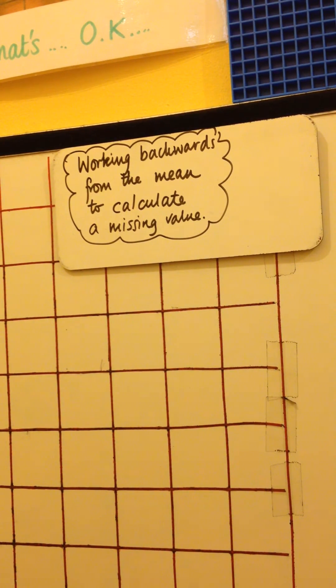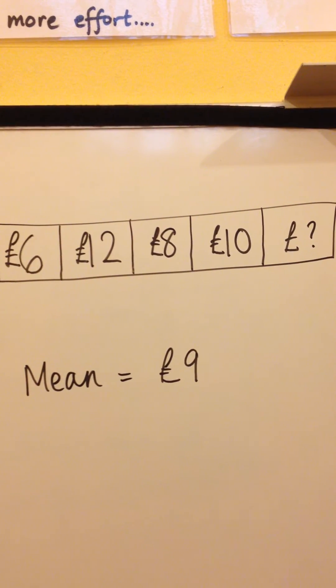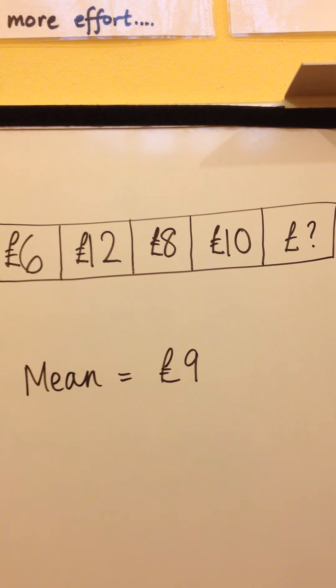Working backwards from the mean to calculate a missing value. Imagine a cake stall at a school. These are the amounts of money taken on five consecutive days, but one of the amounts is missing. However, we know that the mean is £9.